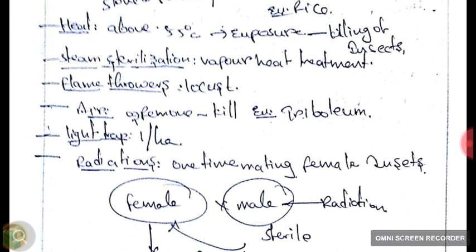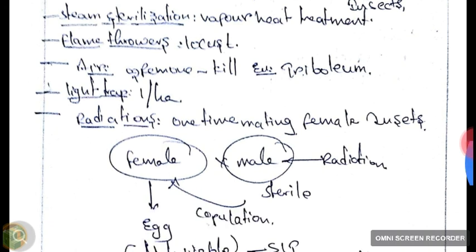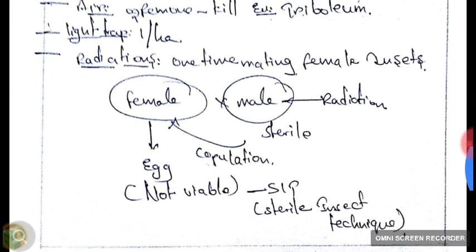The next one is light traps. Some insects are very attracted towards light. If we arrange one light trap per hectare, it will attract all the insects, and we use methods at the trap to kill them.